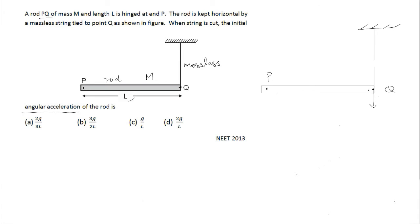It is hinged here, don't forget. At the moment the string is cut, point Q will be moving vertically downward. So angular acceleration is asked — there will be rotational motion, the rod will be rotating about this point. So you know tau is equal to I alpha. We take torque about point P.